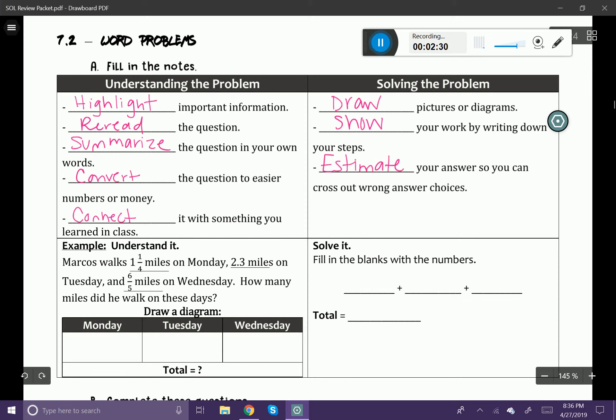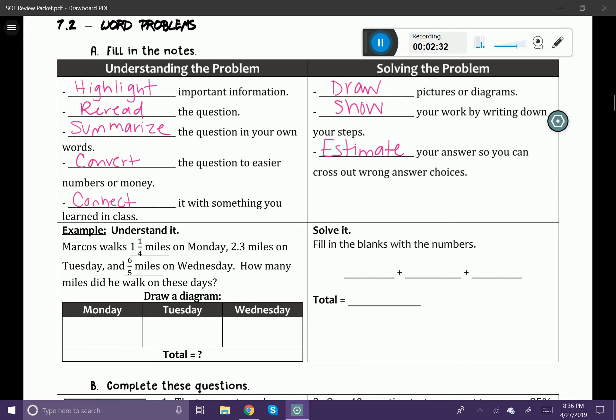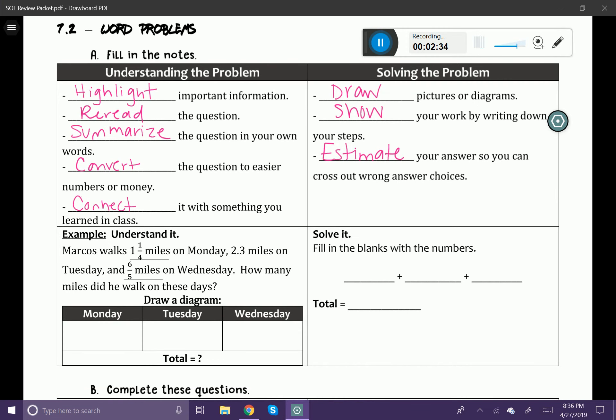Okay, now let's go ahead and try a problem using all of these tips here. The example says, Marcos walks one and one fourth miles on Monday, 2.3 miles on Tuesday, and six fifths miles on Wednesday. How many miles did he walk on these days?